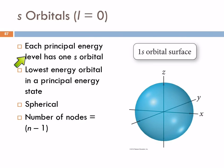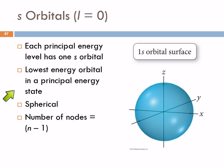Each principal energy level — n equals 1, n equals 2 — is going to have one s orbital. This is the lowest energy orbital in that principal energy state. It's spherical, and the number of nodes that it has is equal to n minus 1. So the 1s orbital doesn't have a node, because n is 1 and 1 minus 1 is 0. n equals 2 has 1 node, n equals 3 has 2 nodes.